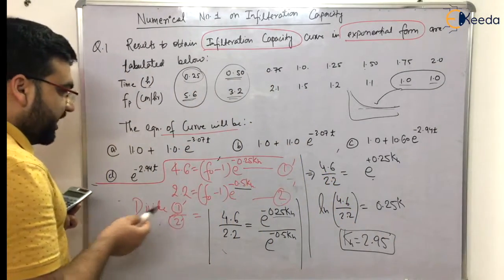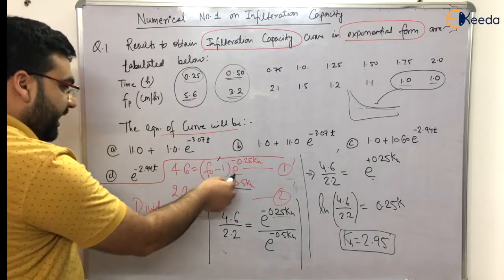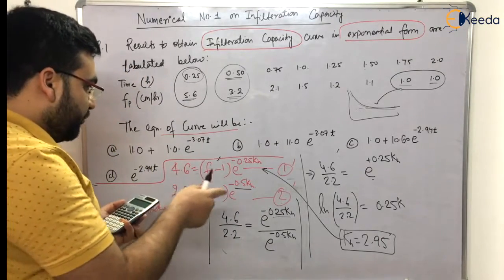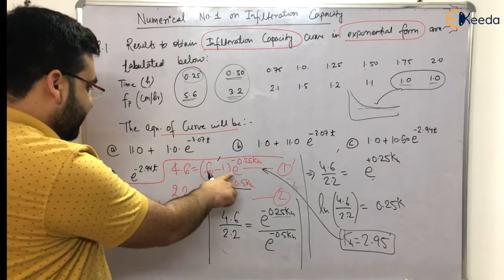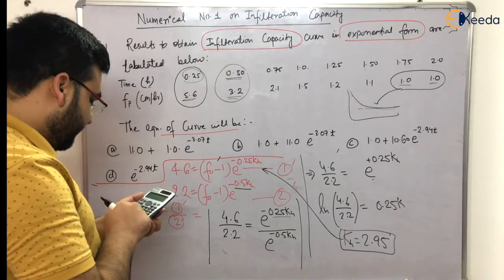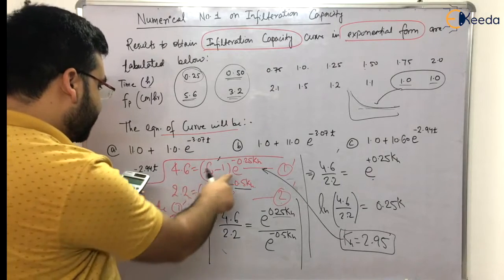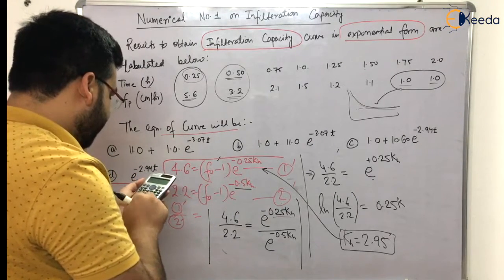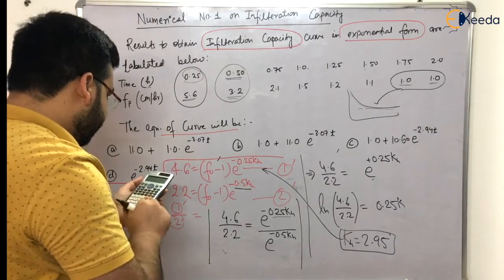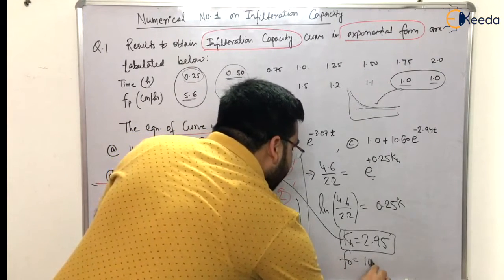With KH = 2.95, substituting back into equation one-dash: 4.6 = (F0 − 1) × e^(−0.25 × 2.95). Evaluating e^(−0.7375) ≈ 0.47, so F0 − 1 = 4.6 / 0.47 ≈ 9.61, giving F0 = 10.61 cm/hr.